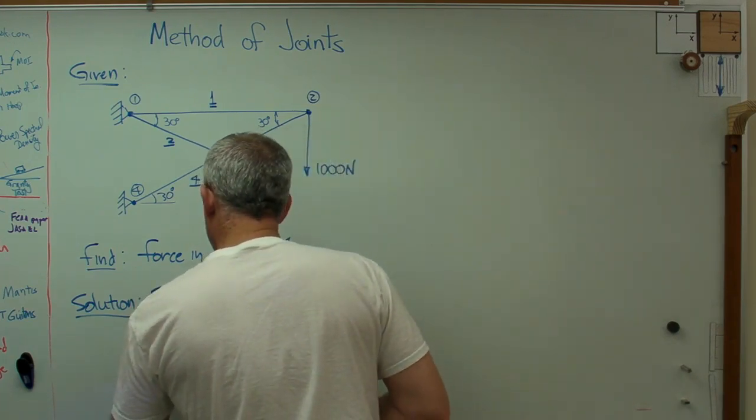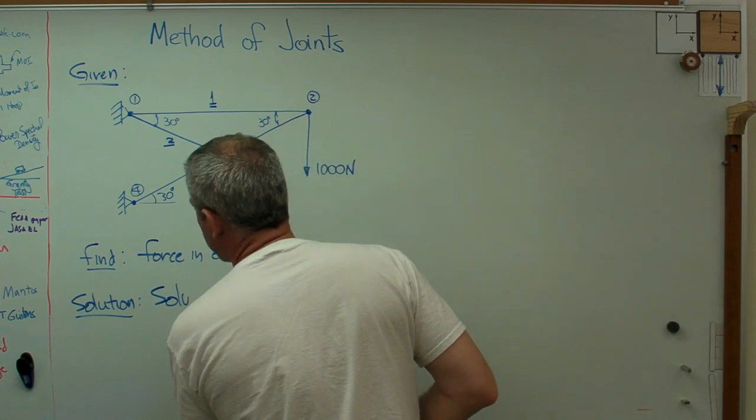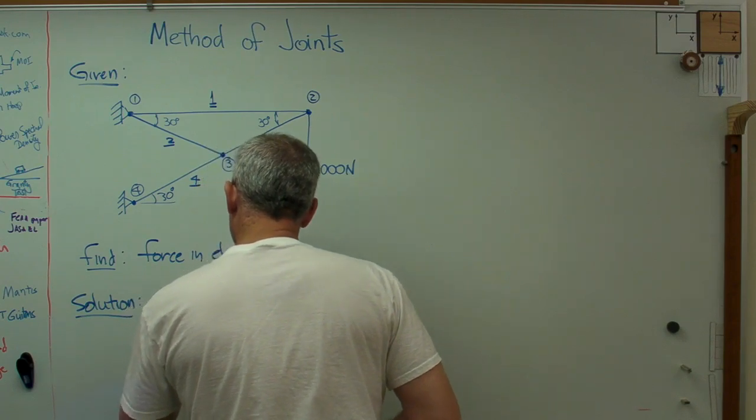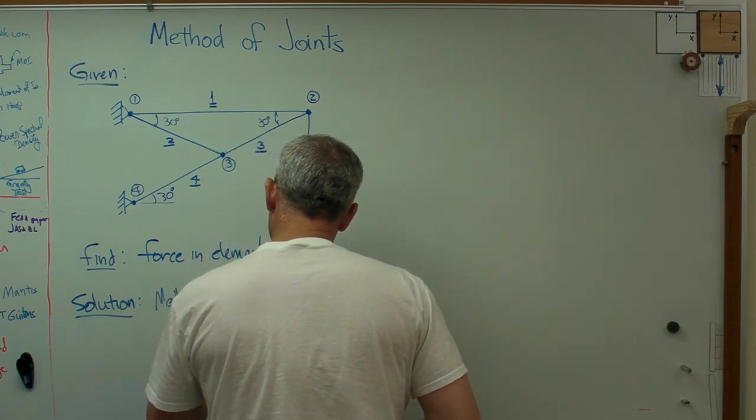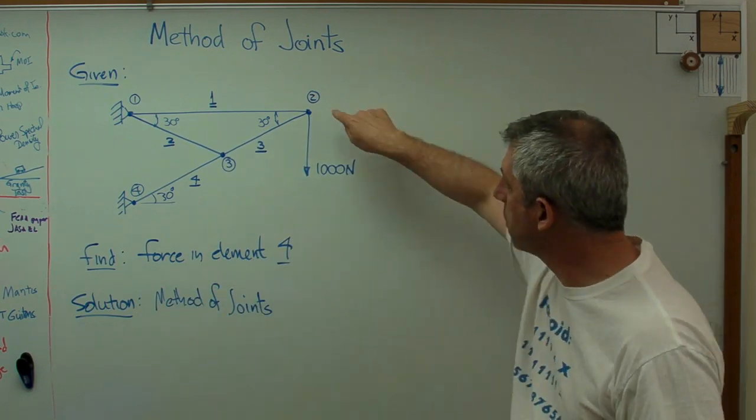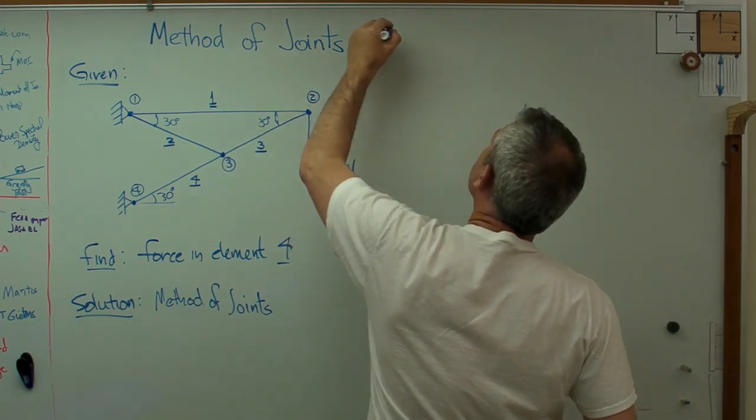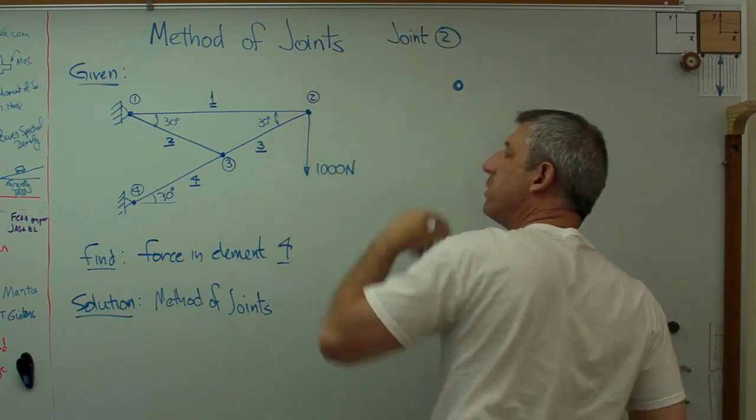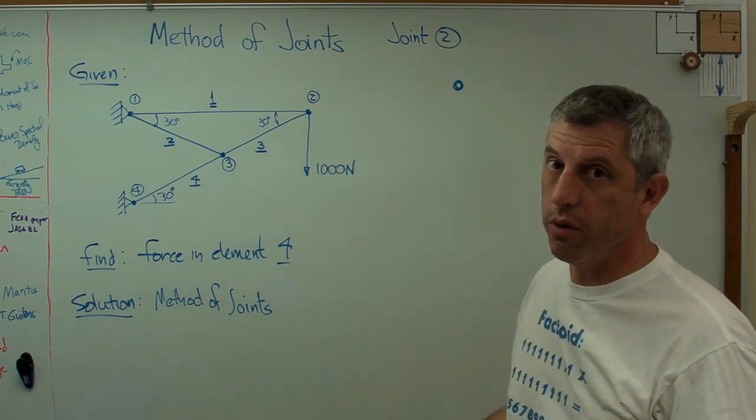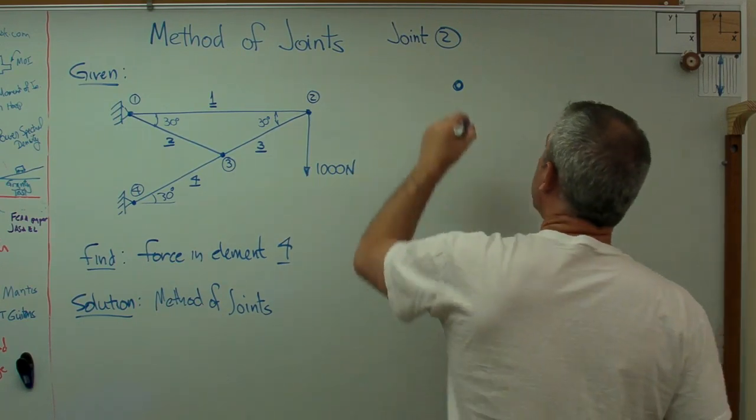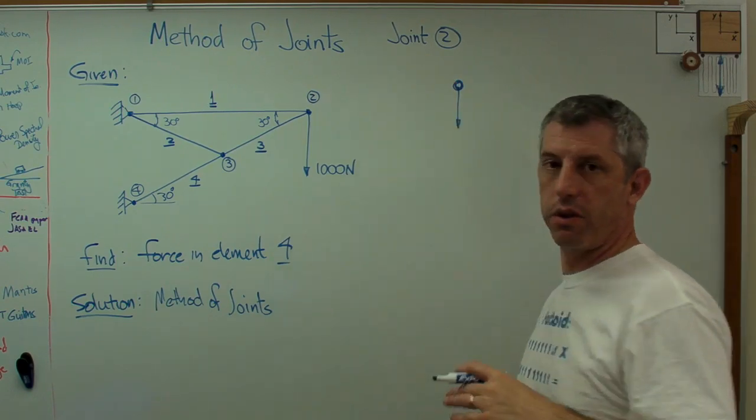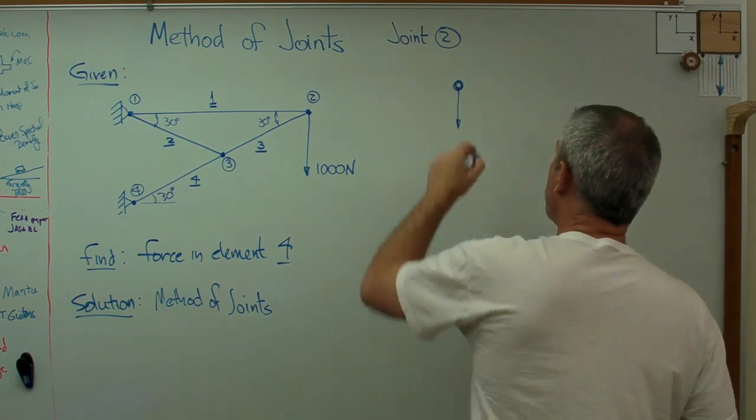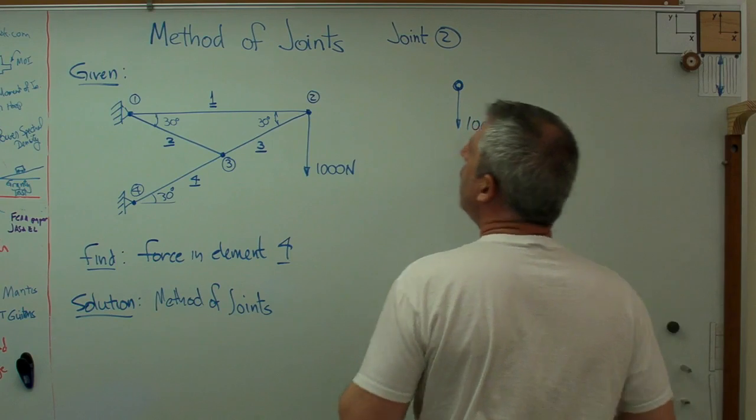I'll just write method of joints here. What I'm going to do is start with a free body diagram of joint two. Always start with a free body diagram. If you're not doing a free body diagram, something's wrong. There are very few times in the world of statics or strength of materials or dynamics where you shouldn't be doing a free body diagram, and I'm not about to violate that rule now.